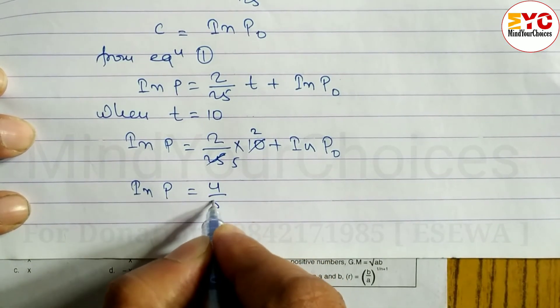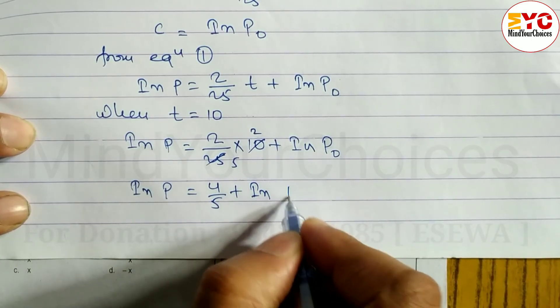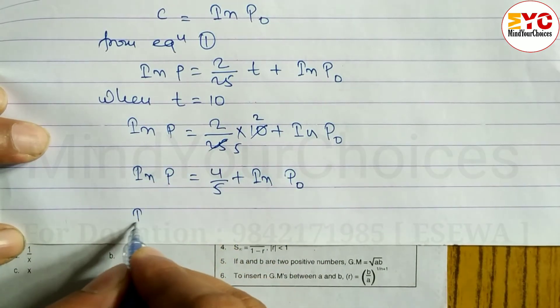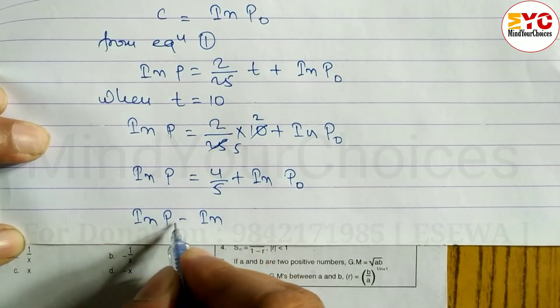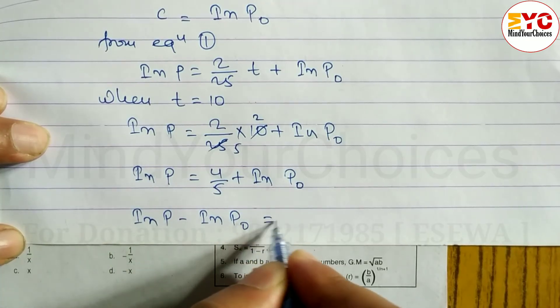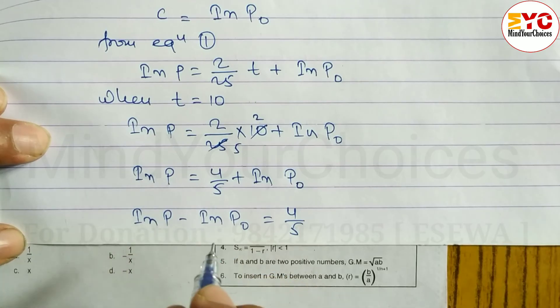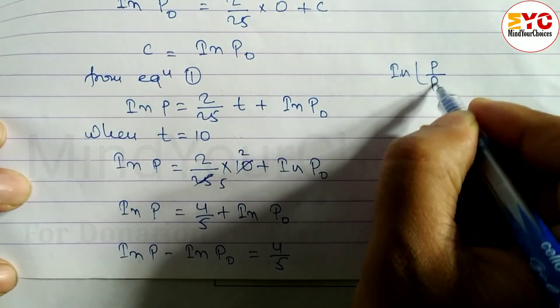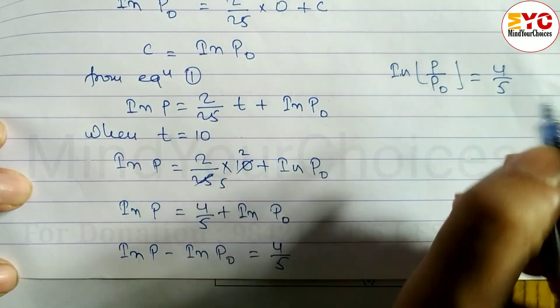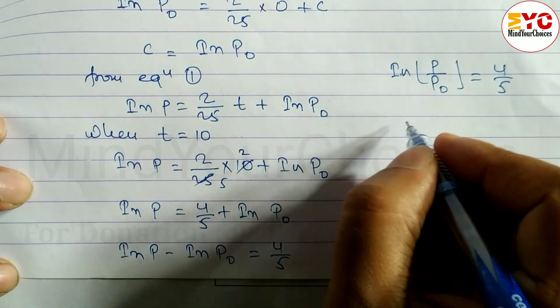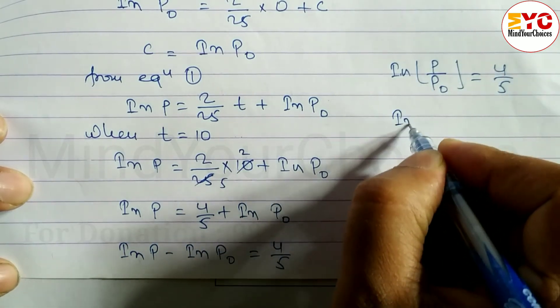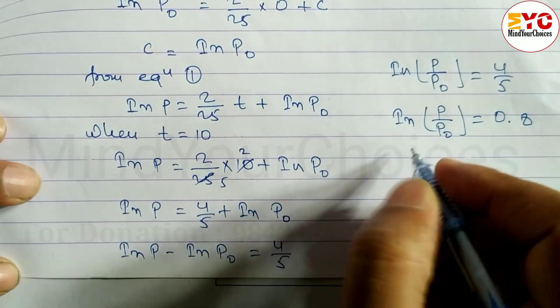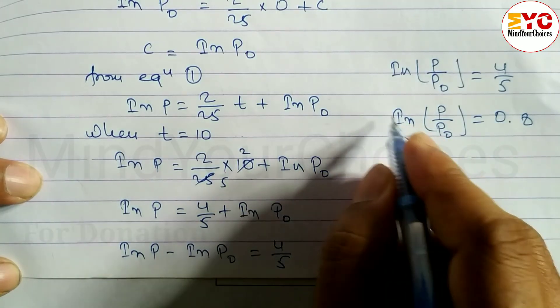Now we can take left side: ln P minus ln P0 is equal to 4 by 5. When we have minus between logs, we divide. So ln P by P0 is equal to 4 by 5. Now dividing this we get P by P0 is equal to 0.8.